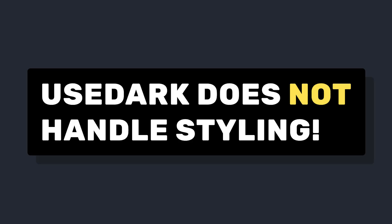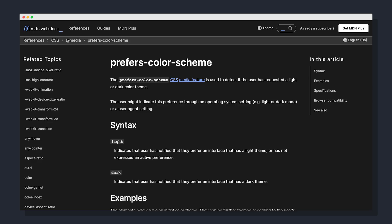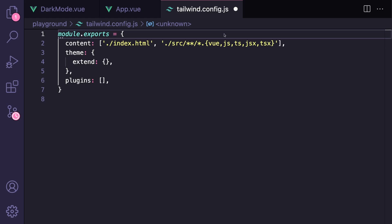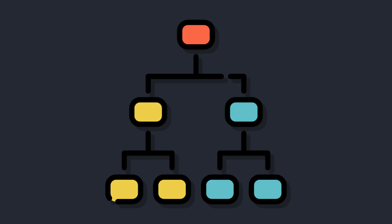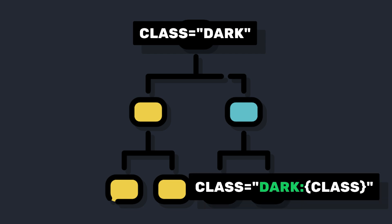Let's shift to making our Tailwind styles so our dark mode and light mode actually look different. By default, Tailwind's dark mode uses the prefers-color-scheme CSS media feature. But since we're allowing users to manually toggle dark mode, we have to go to our Tailwind config file and set our dark mode strategy to class. Now whenever the class dark is present earlier in the HTML tree, our elements can use the dark modifier to specifically add classes when we're in dark mode.